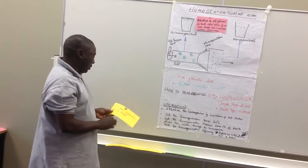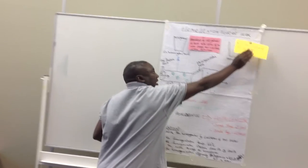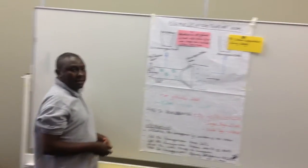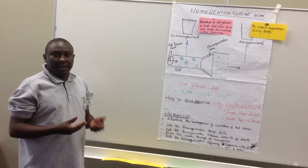The first reason why we homogenize milk is to have no cream separation. This is important because the milk looks better, it looks whiter, and the fat is well distributed.